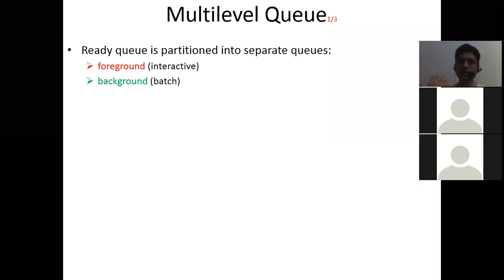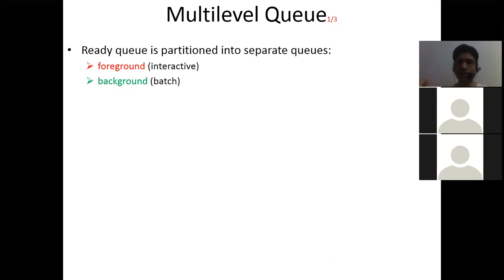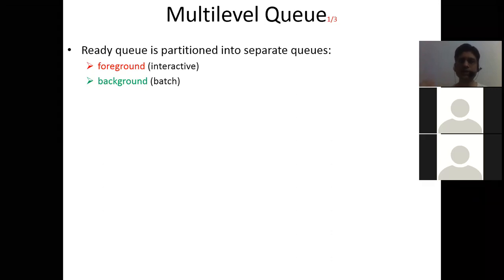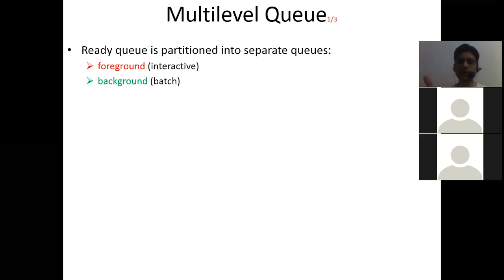You are not so much interested in background services because they are running in the background — like a wall or curtain behind me that you are not bothered about. But you are much more interested in my interaction. That is what I am telling you — the concepts of this multi-level queue. This is how we bifurcate processes by nature: one is interactive and another is batch, background process. Low priority processes can be sent to the background and high priority processes to the foreground.